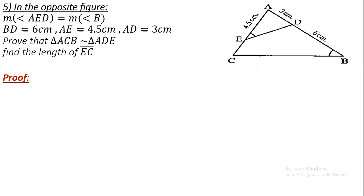Example number five: we are given AE, and BD equals 6 centimeters, AD equals 3 centimeters, and AE equals 4.5 centimeters. We need to prove that triangles ACB and ADE are similar, and find the length of EC.